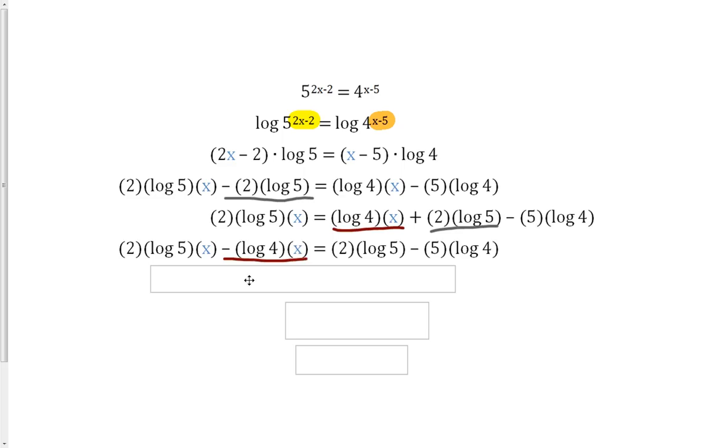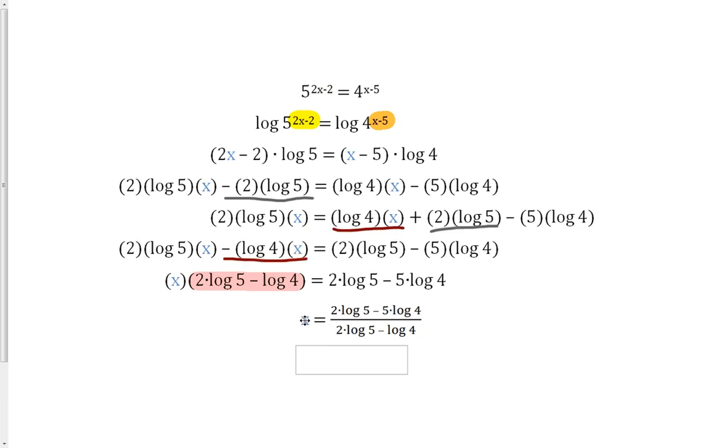Finally, we're going to factor out our x on the left so that we have x times 2 log 5 minus log 4. Our right side doesn't change. And then finally, we're just going to divide both sides by this big chunk of constant that we have, 2 times log 5 minus log 4, so that we're left with x equals 2 log 5 minus 5 times log 4 all over 2 log 5 minus log 4.